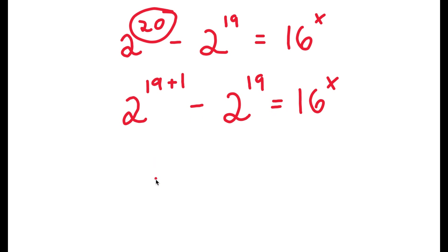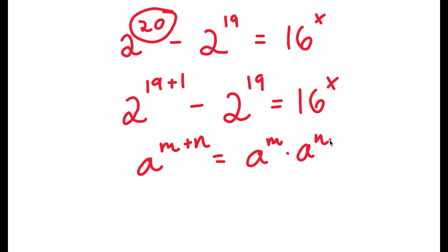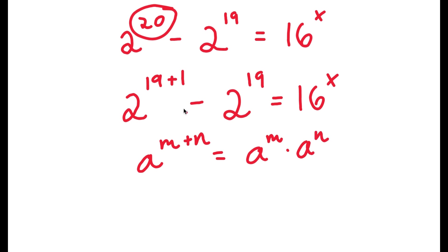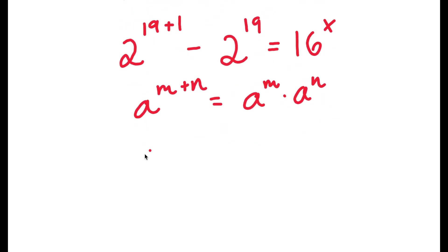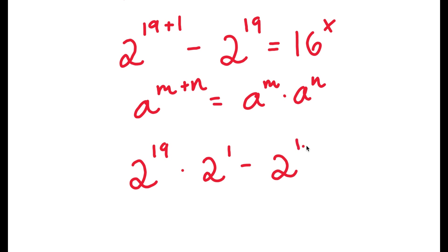If I have something in the form a to the power of m plus n, this is equal to a to the power of m times a to the power of n. So in this case, I have 2 to the power of 19 plus 1, and this is going to equal 2 to the power of 19 times 2 to the power of 1. Now I have this minus 2 to the power of 19 is equal to 16 to the power of x.